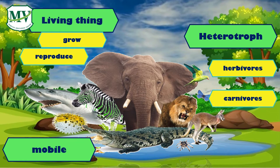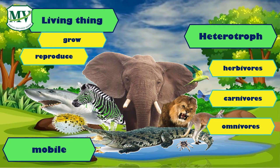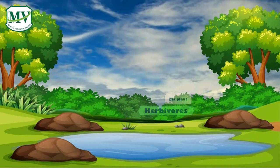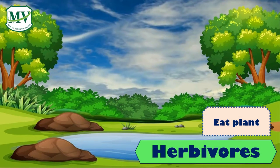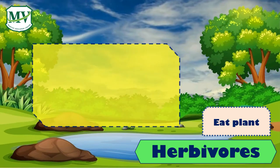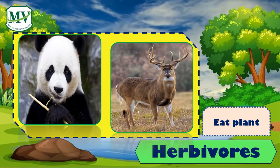The herbivores, carnivores, and omnivores. Herbivores are animals that get energy by eating plants, like panda and deer.